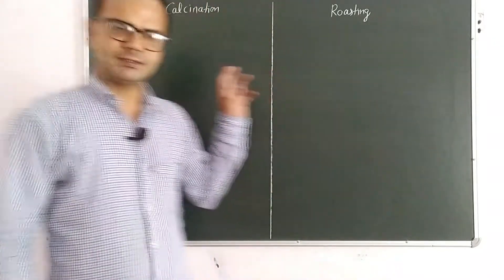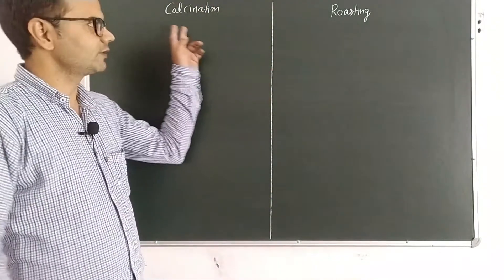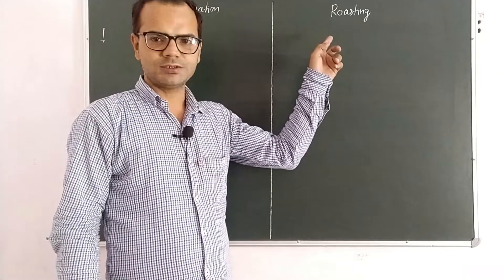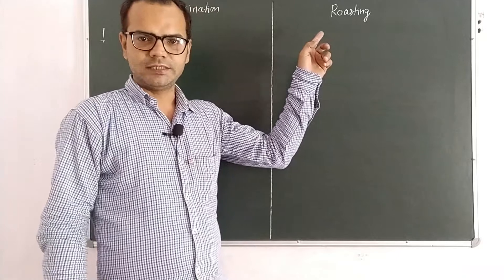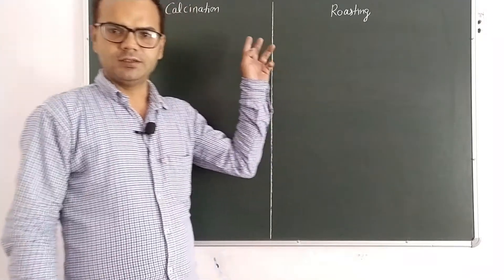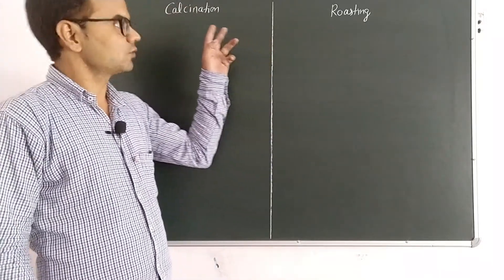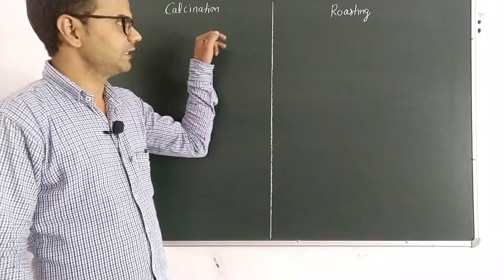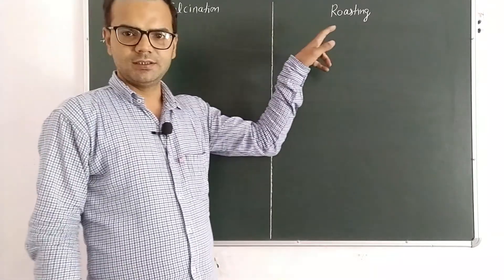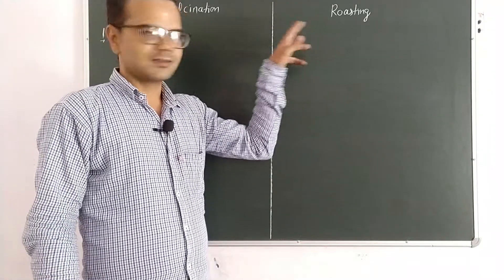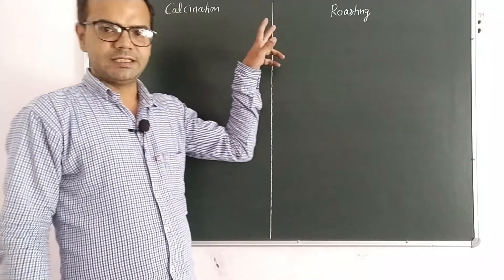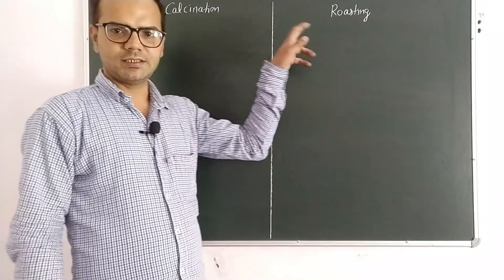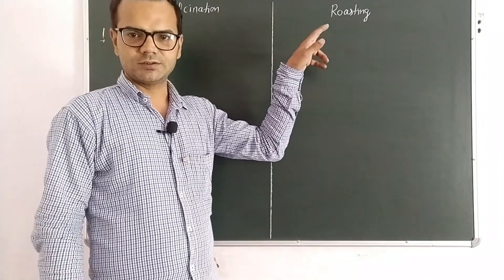Hello everyone, we are discussing calcination and roasting. As we know, metals are extracted from their ores. The two most commonly used methods are calcination and roasting. There are similarities as well as differences between calcination and roasting.